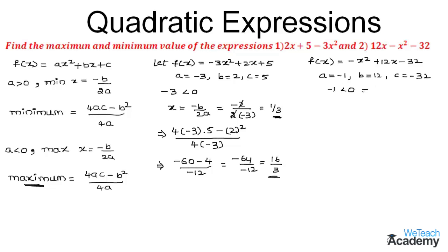So in this case also the expression has the maximum value at x = -b/2a. On substituting the values we get -12 divided by 2 × (-1). We can cancel the minus signs in the numerator and denominator, and by simplifying we get the value as 6.